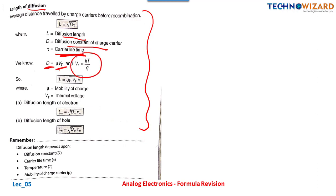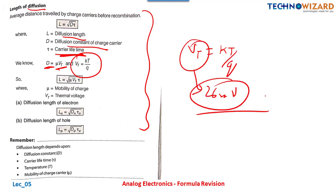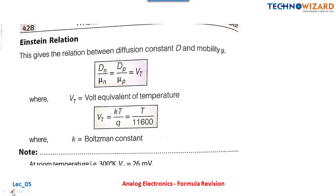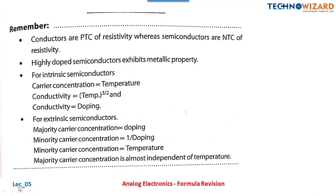The diffusion constant D = μ·VT, where VT is the thermal voltage given by VT = kT/q. At room temperature, VT = 26 millivolts. For electrons, diffusion length Ln = √(Dn·τn), and for holes Lp = √(Dp·τp). Diffusion length depends upon diffusion constant, carrier lifetime, temperature, and mobility. Einstein relation: Dn/μn = Dp/μp = VT. For electrons Dn = μn·VT, and for holes Dp = μp·VT.